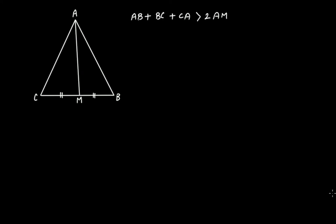What we have to prove in this figure is that if we have triangle ABC where M is a midpoint and therefore AM is a median, AB plus BC plus CA, that is the sum of the lengths of the sides of this triangle, is greater than twice the length of the median, twice the length of any median.